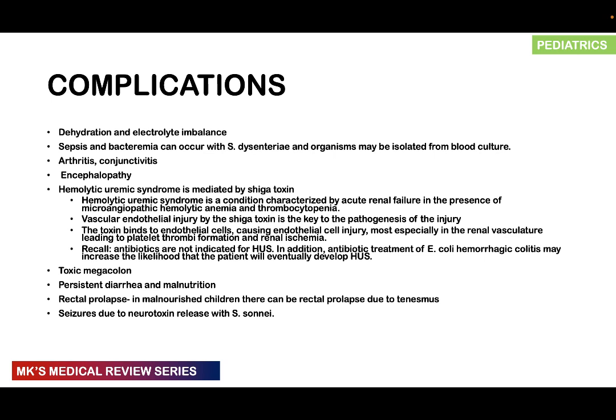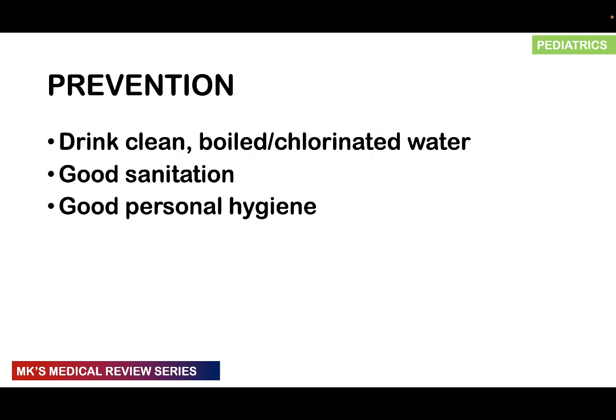Other complications include toxic megacolon, persistent diarrhea and malnutrition, and rectal prolapse — especially in malnourished children due to the tenesmus present. Seizures may occur due to neurotoxins released with Shigella sonnei. Prevention is largely through drinking clean, boiled, and chlorinated water, good sanitation, and good personal hygiene.